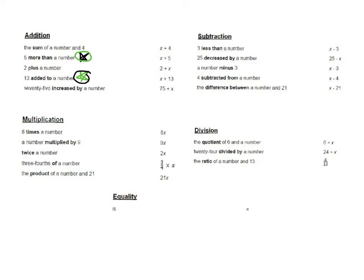For subtraction, the words you'll see are: less than, decrease by, minus, subtracted from, and difference between. The two you have to watch for the flip are 'less than' and 'subtracted from.' So with 'less than,' three is at the beginning and the number is at the end in the phrase, but when translated, the number comes first and three comes at the end — it gets flipped. The same applies with 'subtracted from.'